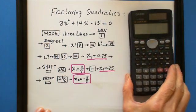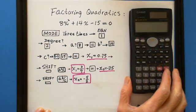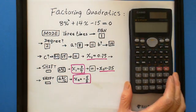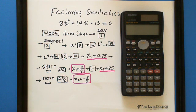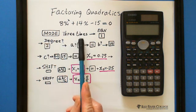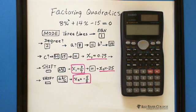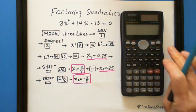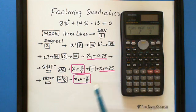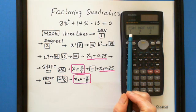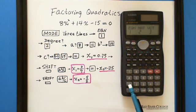Here is the Casio FX991 FMS calculator. The buttons we use: First, we go to mode 3 times. 1, 2, 3. And we find equation 1 here, so we press 1.